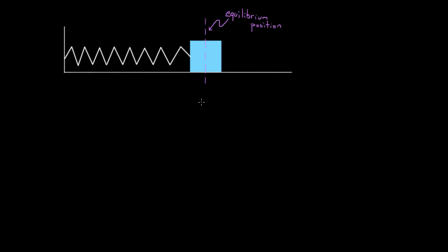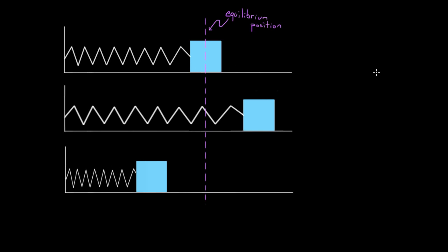There's some terminology you gotta get used to when dealing with simple harmonic oscillators, because people, books, teachers, and professors are gonna throw these terms around like crazy, and if you're not used to them, it could all sound like mathematical witchcraft. So the first term you gotta know: if you displace a mass from equilibrium — that's how you get the thing to oscillate — the maximum magnitude of displacement is called the amplitude. We represent it with a capital A, and it's defined as the maximum magnitude of displacement for that oscillator.